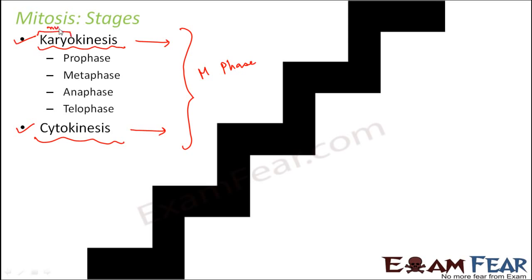The word 'karyo' means nucleus and 'cyto' is derived from cytoplasm. 'Kinesis' is related to movement or motion — like kinetic energy, energy due to motion. So karyokinesis means division of the nucleus — when the nucleus of the parent cell divides. Cytokinesis is when the cytoplasm of the parent cell divides.